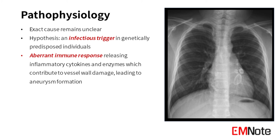The exact cause of Kawasaki disease remains unclear, with the leading hypothesis suggesting an infectious trigger in genetically predisposed individuals. The systemic vasculitis is believed to result from an aberrant immune response which releases inflammatory cytokines and enzymes that contribute to vessel wall damage, leading to aneurysm formation.